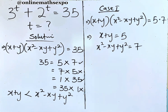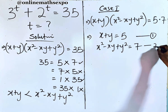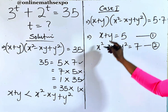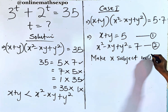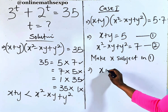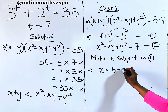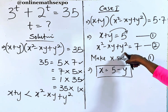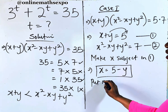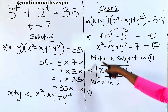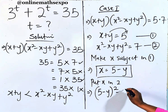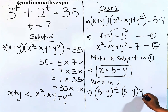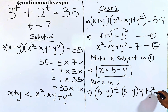This gives us a system of equations — equation 1: x plus y equals 5, and equation 2: x squared minus xy plus y squared equals 7. Solving simultaneously, we make x the subject from equation 1: x equals 5 minus y. We then substitute this into equation 2 to get: 5 minus y, all squared, minus 5 minus y times y, plus y squared, equals 7.